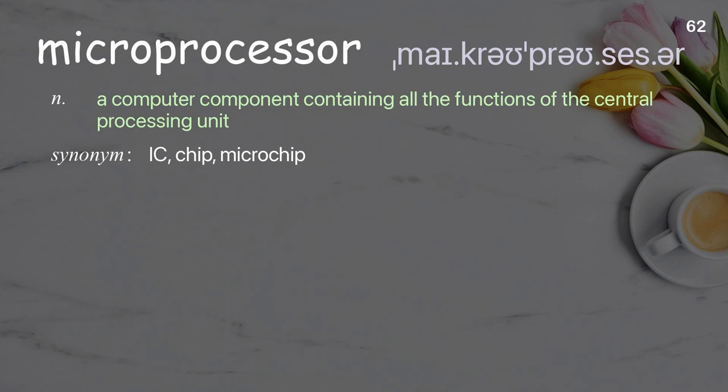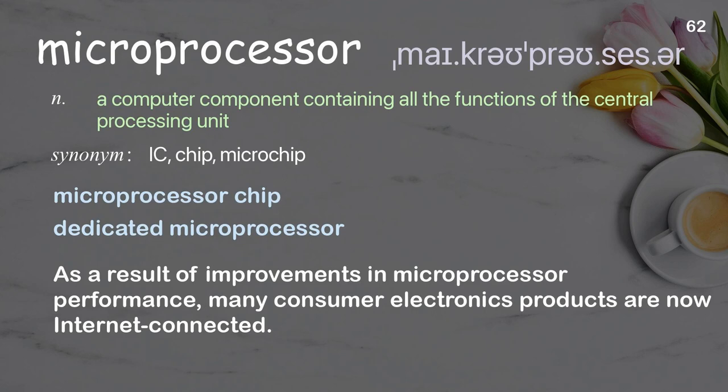Microprocessor: a computer component containing all the functions of the central processing unit. Examples: microprocessor chip, dedicated microprocessor. As a result of improvements in microprocessor performance, many consumer electronics products are now internet connected.